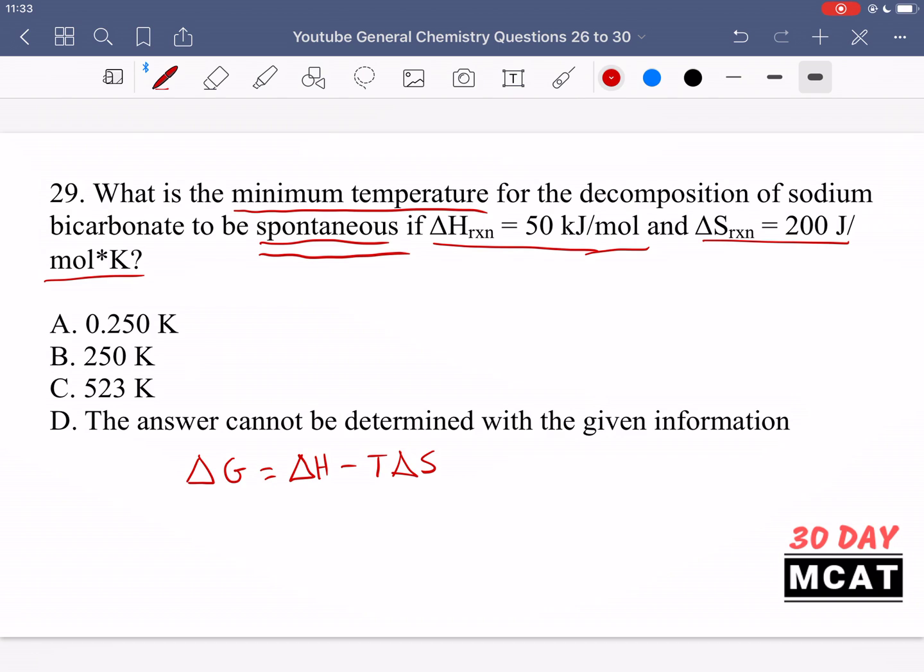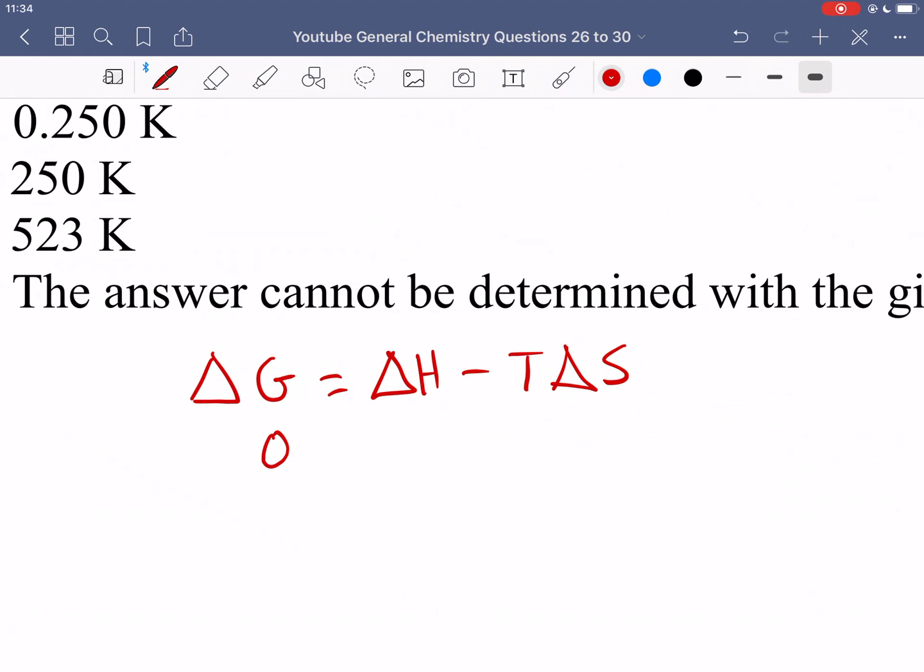So we can figure out a delta G when delta G would be zero, and then we can say if we have at least this temperature or higher, we're going to get a spontaneous reaction. So delta G can be zero.